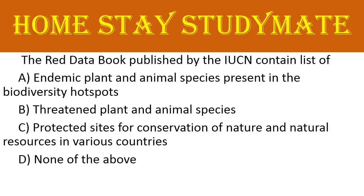Next: the Red Data Book published by IUCN contains a list of — options are: A) endemic plant and animal species present in biodiversity hotspots, B) threatened plant and animal species, C) protected sites for conservation of nature and natural resources in various countries, or D) none of the above. The right answer is option B: threatened plant and animal species.